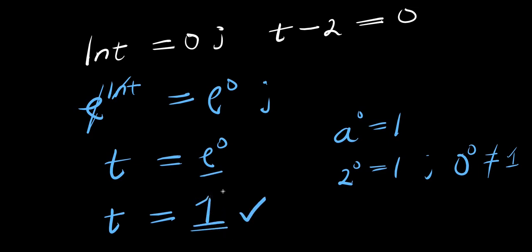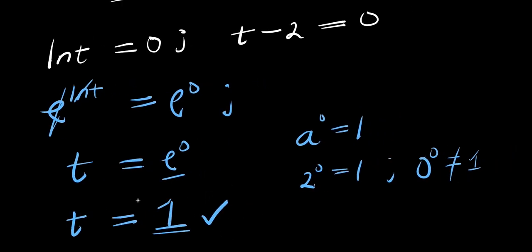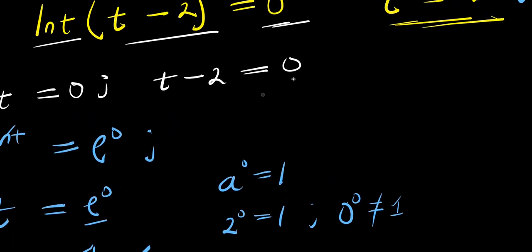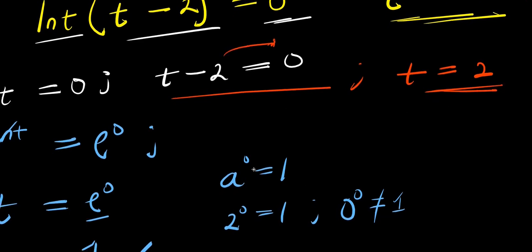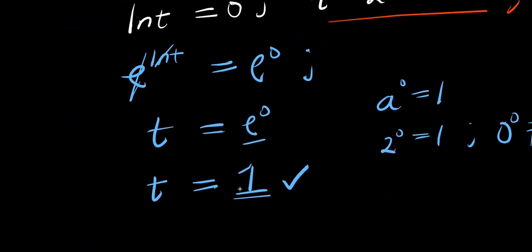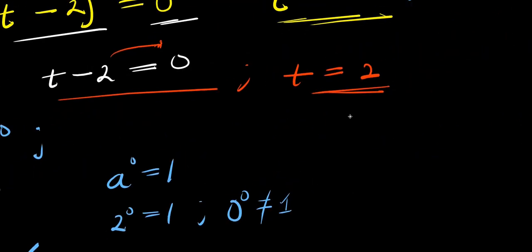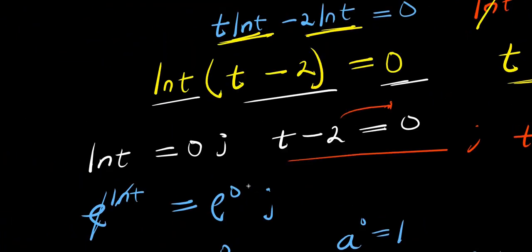We now have two different solutions. Solving t minus 2 equals 0 gives t equals 2. So using this method we have t equals 1 and t equals 2. This is one method of solving the equation and finding both solutions.